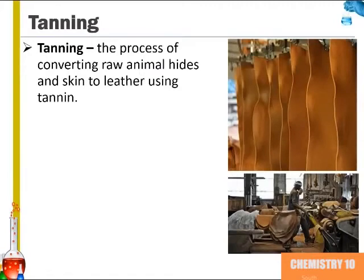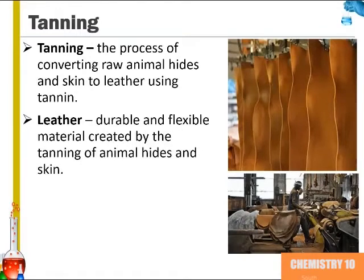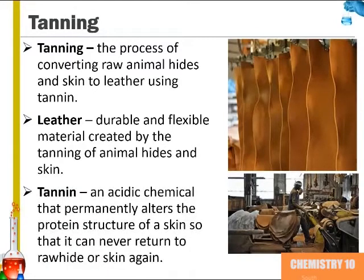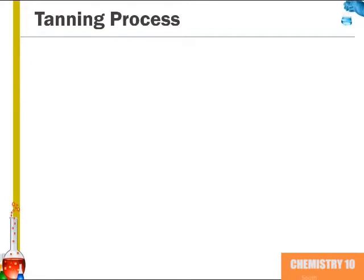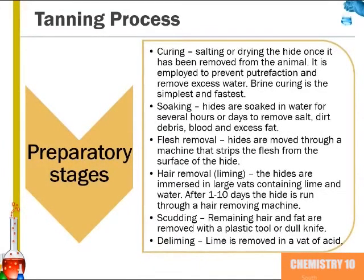We will now talk about tanning. Tanning is the process of converting raw animal hides and skin into leather using tannin. Leather is a durable and flexible material created by the tanning of animal hides and skin. Tannin is an acidic chemical that permanently alters the protein structure of skin, so it can never return to raw hide or skin again. The tanning process begins with a number of preparatory stages. Curing is the salting or drying of the hide once it has been removed from the animal, employed to prevent putrefaction and remove excess water. Brine curing is the simplest and fastest method.